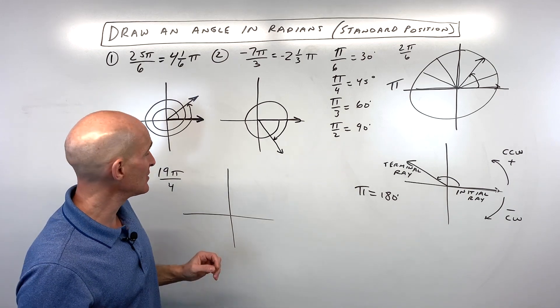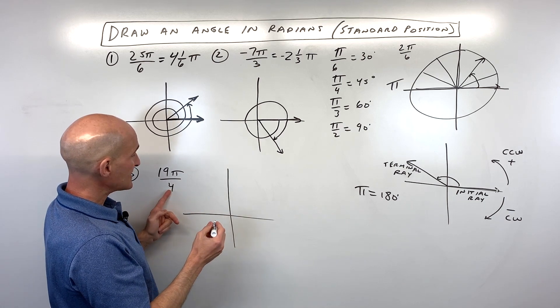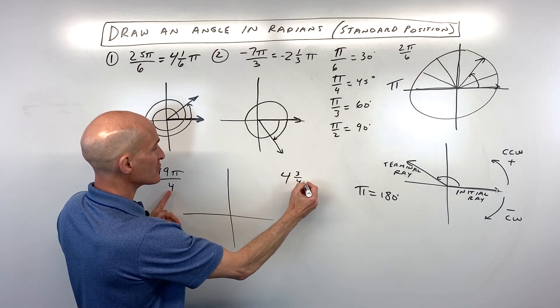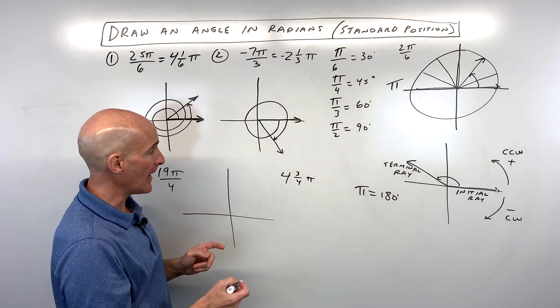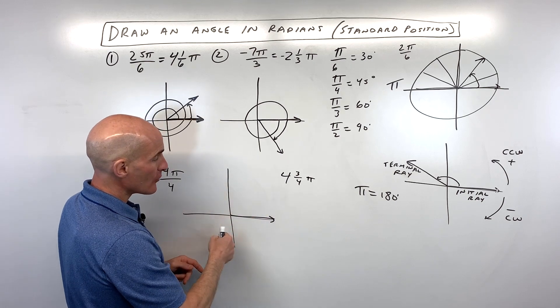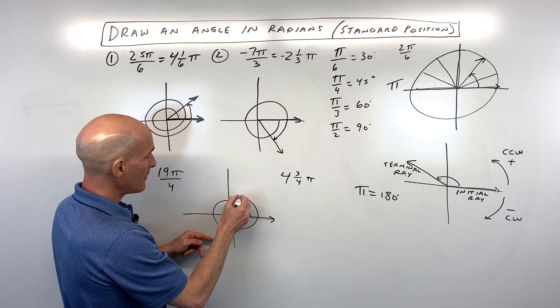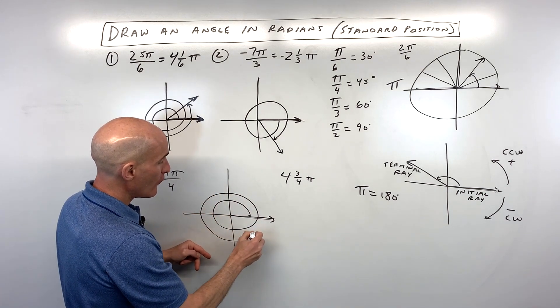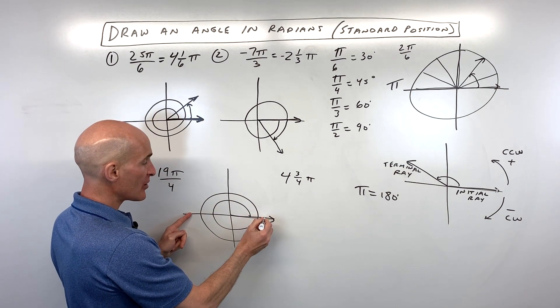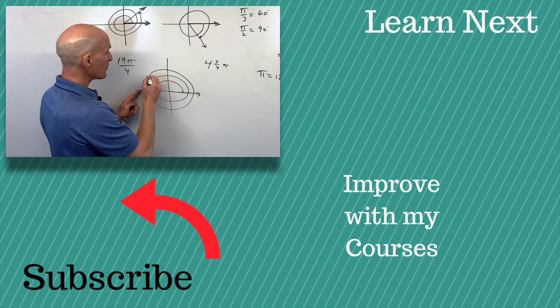Okay, last example. See if you can get this one. 19 pi over 4. 4 goes into 19 how many times? 4 times with 3 left over. So that's really like 4 and 3 4ths pi. This is positive, so remember when it's positive, we're going counterclockwise. So we're going to go 1 pi, 2 pi, 3 pi, 4 pi, and now 3 4ths of pi. Well, another pi would put us all the way over here at 180 degrees, but we're going 3 quarters of the way, which is going to be right about there.